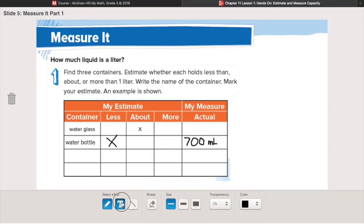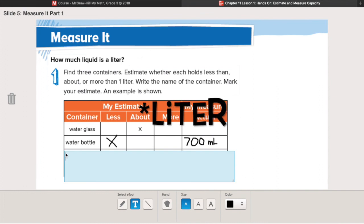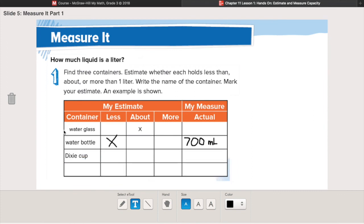The next item we have is a Dixie cup. These are like our small little bathroom cups. This one is a no-brainer. Is that one less than, about, or more than a liter? Well, a Dixie cup is definitely smaller than my big measuring cup, and my big measuring cup is a liter. So I'm going to put an X in less. But I'm still going to measure it because I want to know how much is it. So I'm going to pour my water into my Dixie cup.